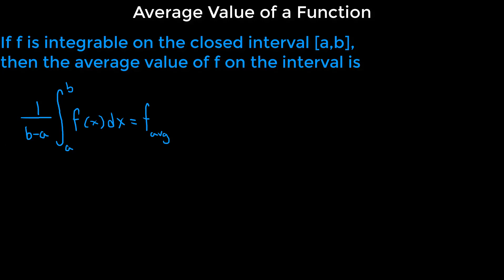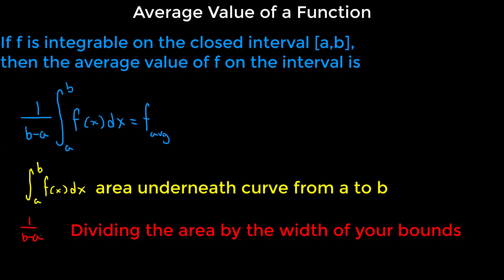And let me break this down for you too. The definite integral from a to b of f of x with respect to x, we know that this represents the area, the two-dimensional area from a to b. The 1 over b minus a, that represents this area being divided by the distance from a to b, which means that you are dividing by the width, leaving you with an average height.